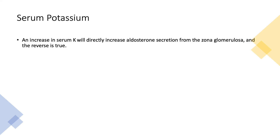Serum potassium itself is a regulator of potassium secretion. When you have hyperkalemia, you increase aldosterone secretion directly from the zona glomerulosa, enhancing potassium excretion. On the other hand, when you have hypokalemia, this suppresses aldosterone and preserves potassium.